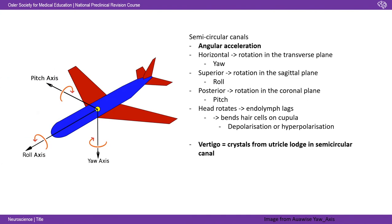Much the same method of working applies in the semicircular canals, but here they're detecting angular acceleration. There are three of them detecting three different angles in 3D space: horizontal, superior, and posterior. The horizontal detects rotation in the transverse plane — moving your head left or right, known as the yaw axis. The superior semicircular canal detects rotation in the sagittal plane — tilting your head sideways, like looking confused. The posterior semicircular canal detects rotation in the coronal plane — that's your pitch axis, nodding forward and backwards.